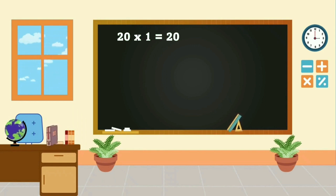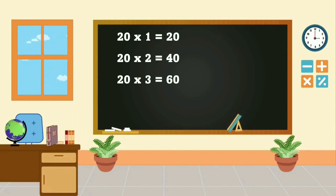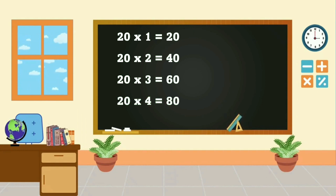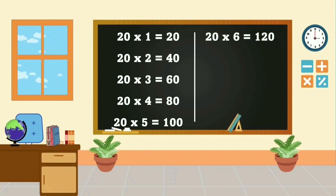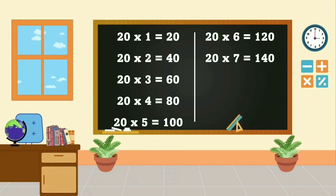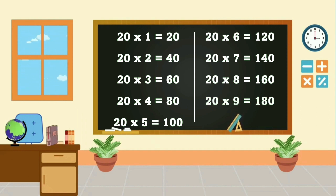21 is 20, 22 is 40, 23 is 60, 24 is 80, 25 is 100, 26 is 120, 27 is 140, 28 is 160, 29 is 180.